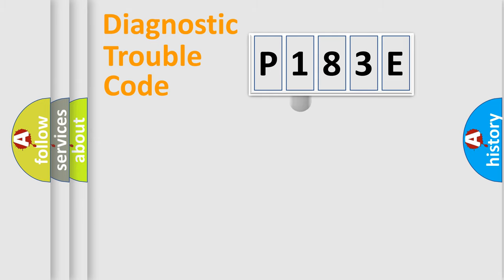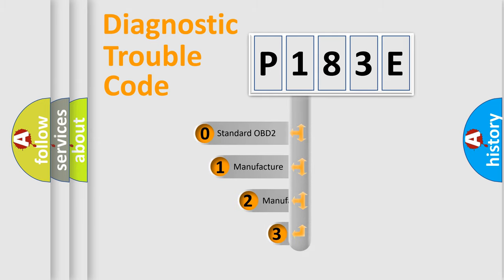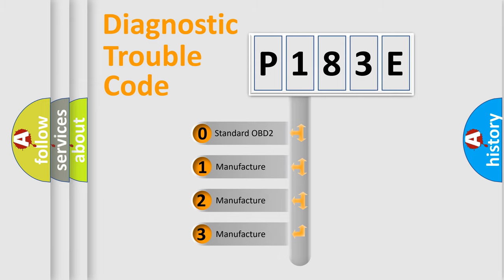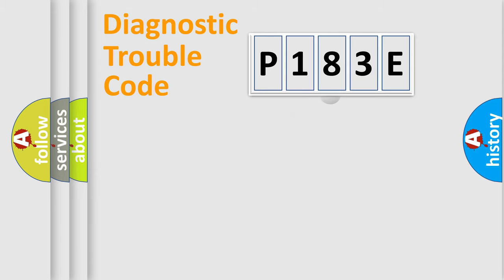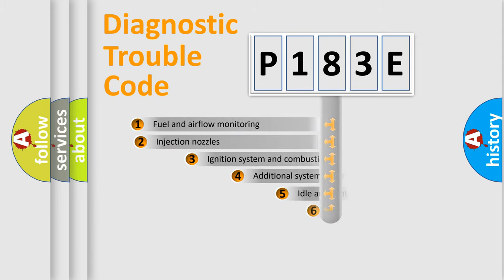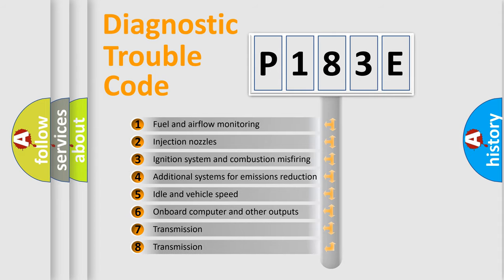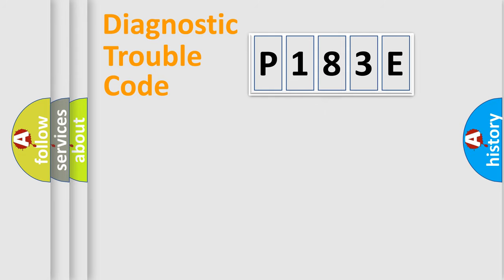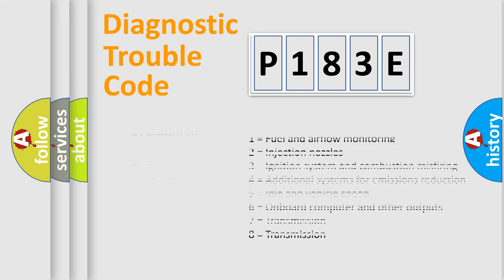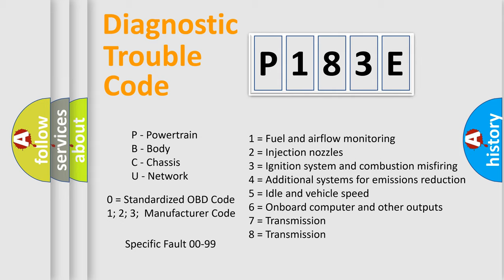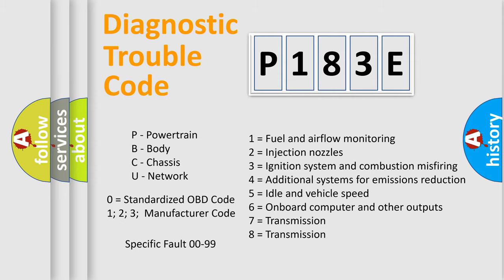This distribution is defined in the first character of the code. If the second character is expressed as zero, it is a standardized error. In the case of numbers 1, 2, or 3, it is a manufacturer-specific error expression. The third character specifies a subset of errors. This distribution is valid only for the standardized DTC code, and only the last two characters define the specific fault of the group. This division is valid only if the second character is expressed by the number zero.